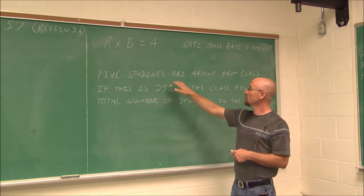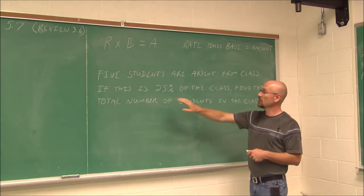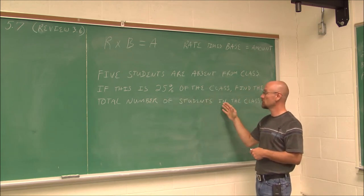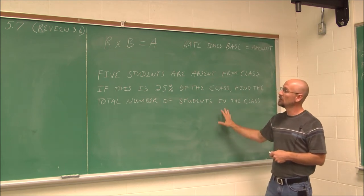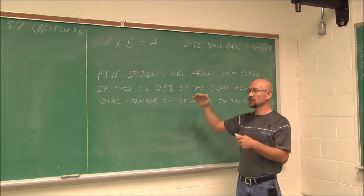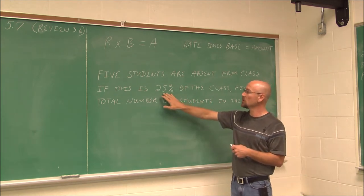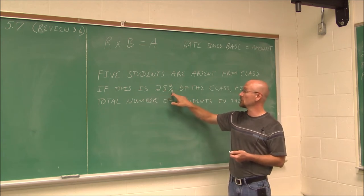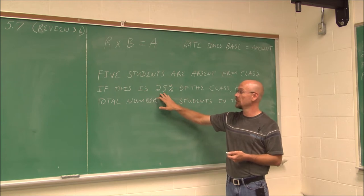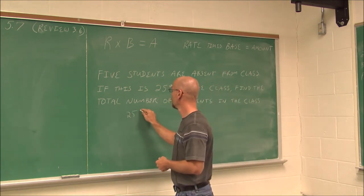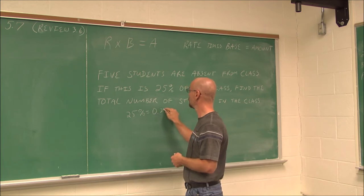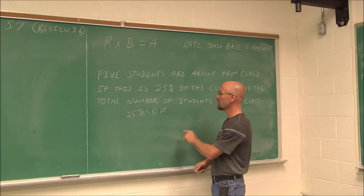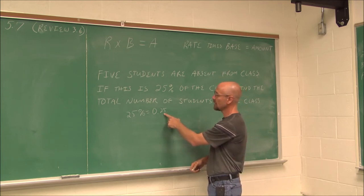Here's our example. We have five students that are absent from class. If this is 25% of the class, find the total number of students in the class. Now to do that, if we're comfortable converting percents to fractions or to decimals, we know that in order to use a percent, we have to write it as a number. This is per 100, so maybe we'd write it as 0.25. So 25% is 0.25. This would be the number we're going to use.